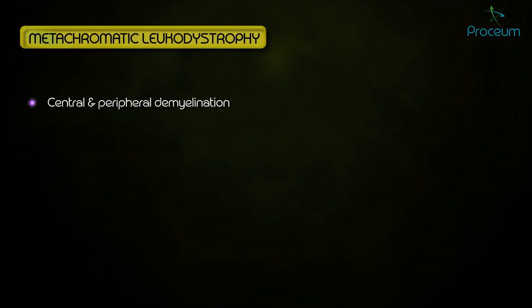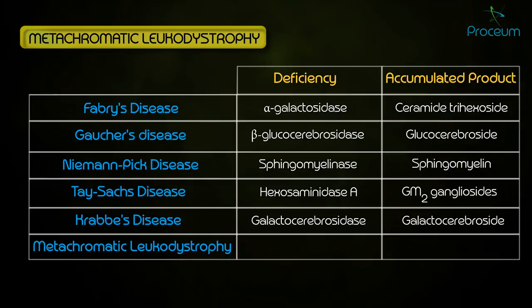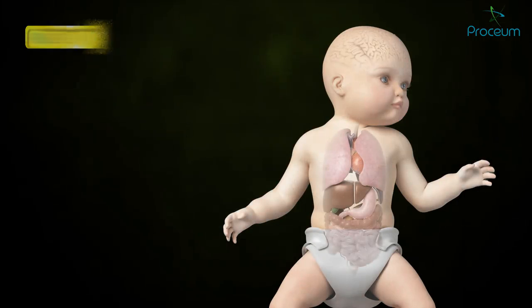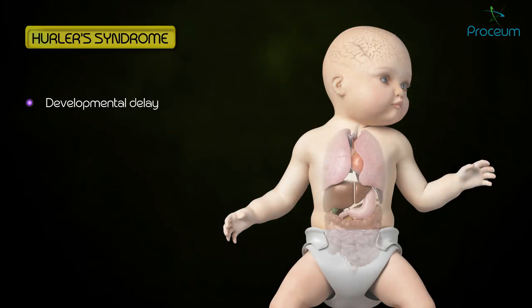Metachromatic leukodystrophy presents with central and peripheral demyelination with ataxia and dementia. It has a deficiency of arylsulfatase A, leading to an accumulation of cerebroside sulfate.